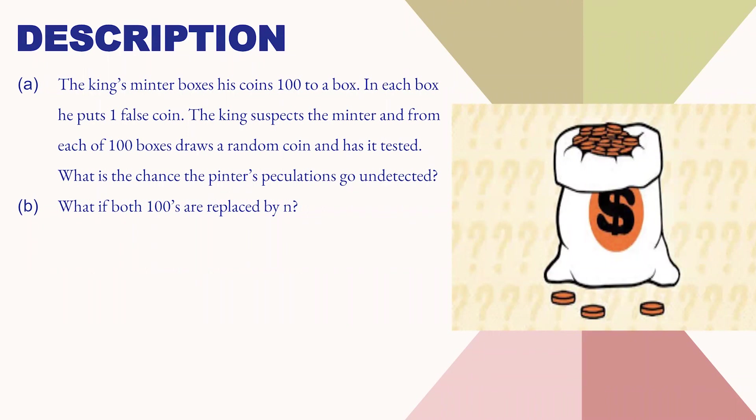In this question, the king's minister puts 100 coins in a box. In each box he puts 1 false coin. Now the king suspects the minister and from each of the 100 boxes, he draws a coin randomly and tests it. What is the chance that the minister gets undetected? It means that one of the false coins is not detected.